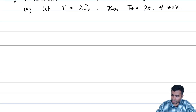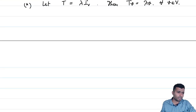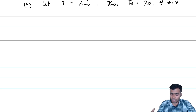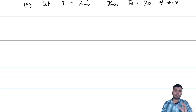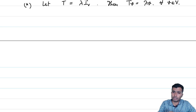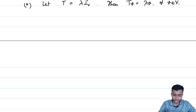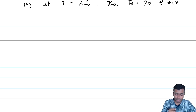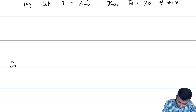For an arbitrary linear transformation, this need not be the case — it need not dilate every vector. However, there are some special vectors in the vector space which might get dilated by a given linear transformation. Such vectors have a special name: they are called eigenvectors. Let me now give a definition.